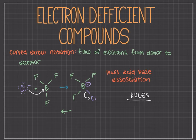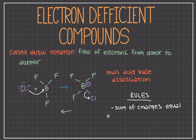Let's keep in mind some rules. For each reaction where you use curved arrow notation, the sum of the charges on the reactants must equal the sum of the charges on the products — basically, charge is conserved. So if we look at our example, in the products we have one negative charge on the boron, and in the reactants we have one negative charge on the chlorine. So they're the same on both sides.